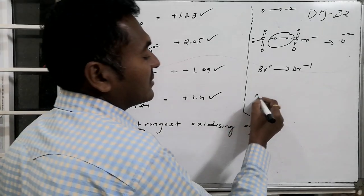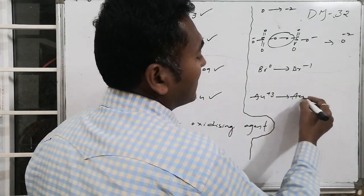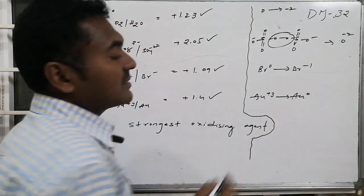Similarly, Rn3 plus is converted from higher oxidation state to lower oxidation state. This is also reduction.